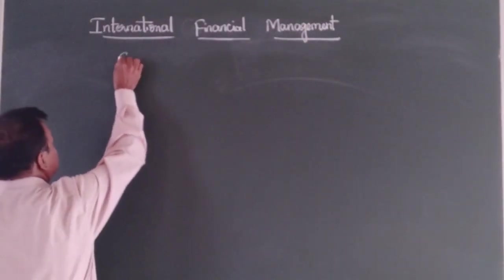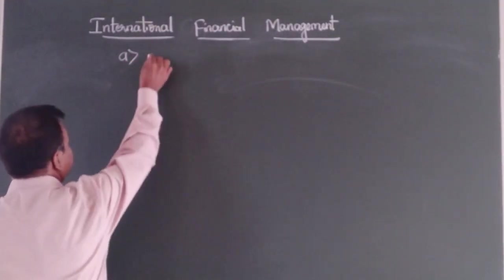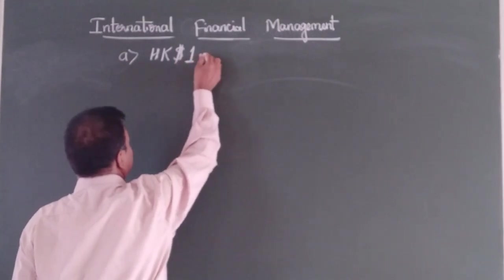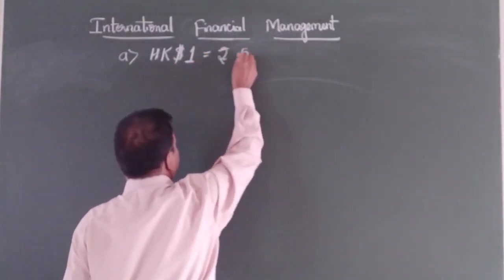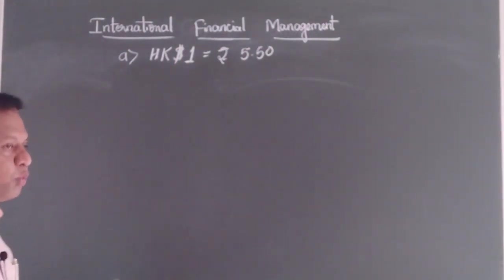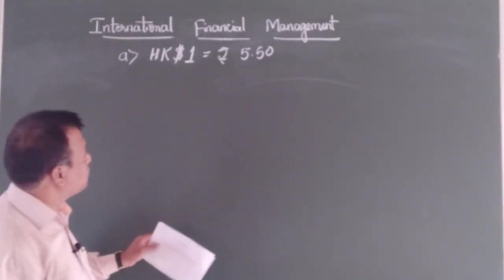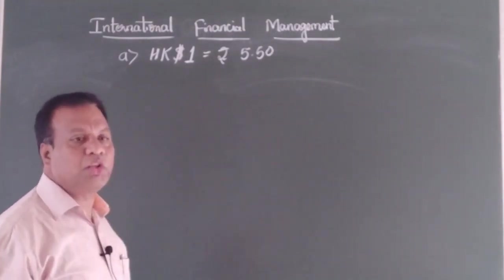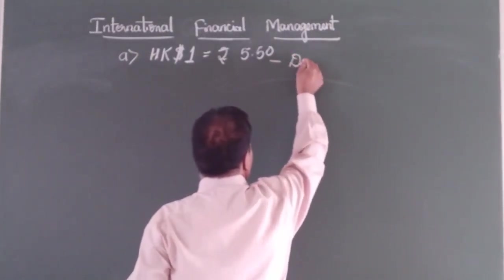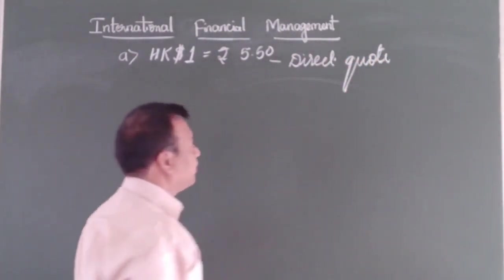The first one is: Hong Kong dollar 1 is equal to rupees 5.50. Now, how do we identify whether this quote is a direct quote or an indirect quote? Whenever a quote is expressed in terms of one unit of foreign currency, we call it a direct quote. So this quote is a direct quote.